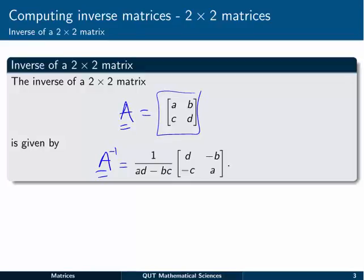then A inverse is 1 over AD minus BC. And then we switch the diagonals, and we leave the other diagonal with minuses on it. So you can just remember that if you like. Another thing to note is that that's actually the determinant of A there. So you can write it like that.